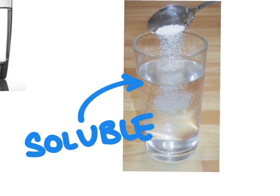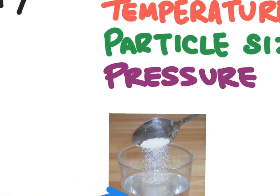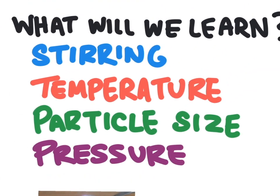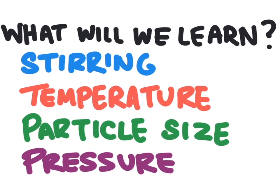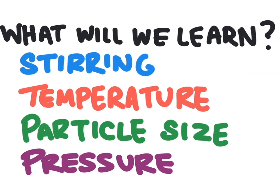In this video we are going to learn about what affects the solubility of things that dissolve in water — why do some things dissolve better, and how can we make something dissolve better? We are going to look at four factors: stirring, temperature, particle size, and pressure.